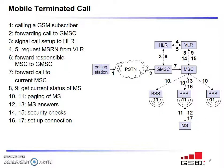The gateway MSC forwards the call to the MSC. The MSC gets the current status of the mobile from VLR, and the VLR sends information back to MSC. With this information, the MSC pages the message to all its BSS. In this example, data is passed to three BSS units, and all BSS receive this information, which is then transmitted to all connected mobile stations.